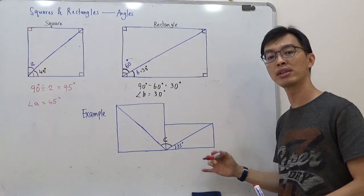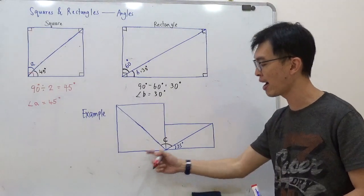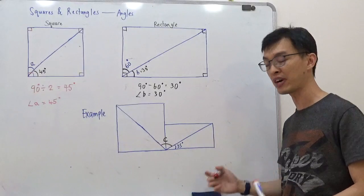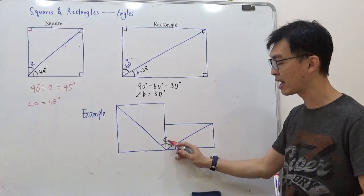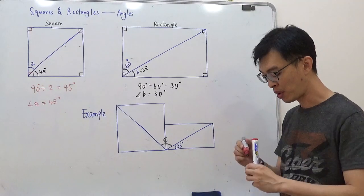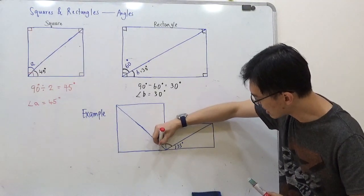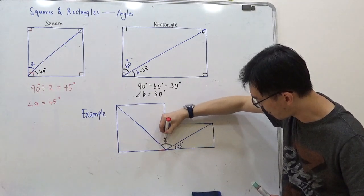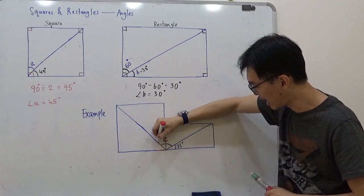Finally, let's come to this example. This example is made out of a square and a rectangle. Let me specify, it's a square and a rectangle. They want us to find angle C down here. What is angle C? If you look at it closely...